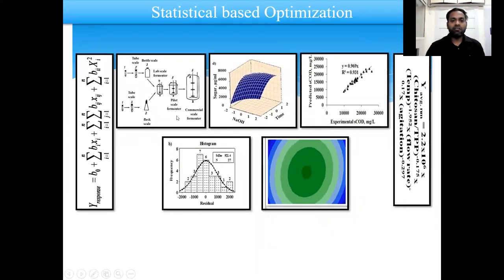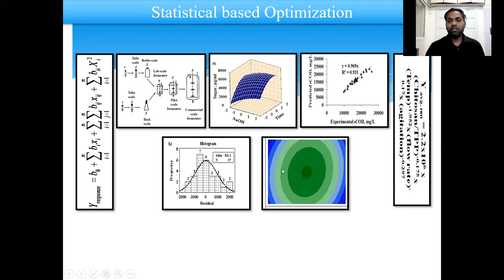So we need to optimize the process at different levels, from flask scale to lab scale, lab scale to fermenter scale, and fermenter scale to commercial scale. Different parameters are involved in the process. We need to find out the interaction between the parameters and their influence on the process. Then you have to simulate the results and predict the output values, develop the correlation between the predicted values and your experimental values, and perform statistical analysis to confirm the suitability of the data with different statistical plots.